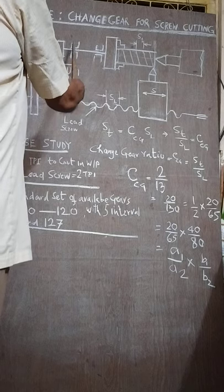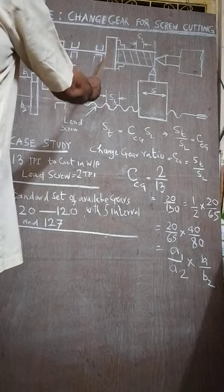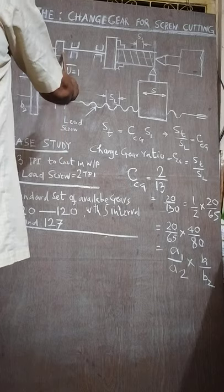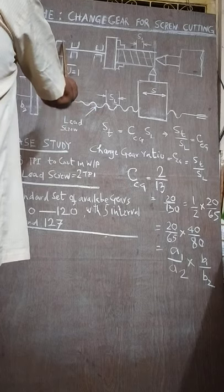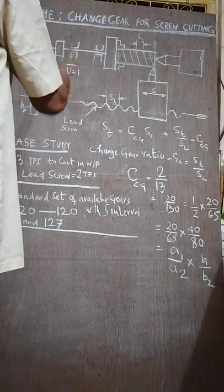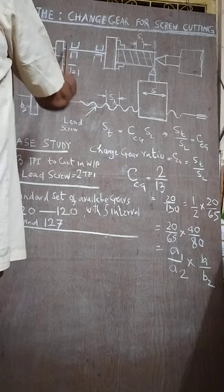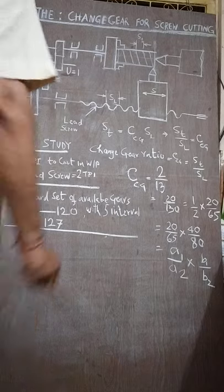Now our arrangement of this is like this. From spindle there is a shaft coming here. We will have an idler. Idler will just convert the same speed from clockwise to anti-clockwise. Purpose of this is to make this ratio 1.